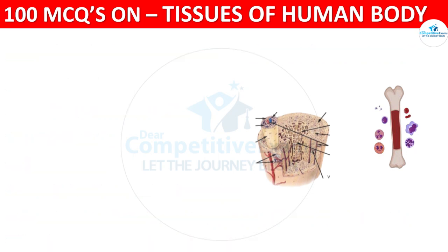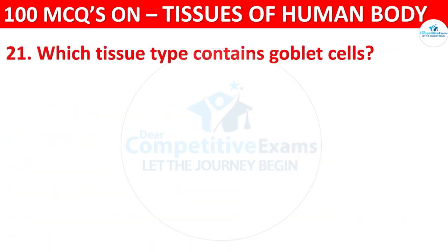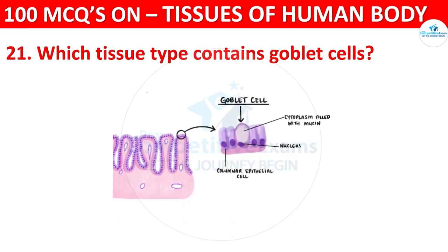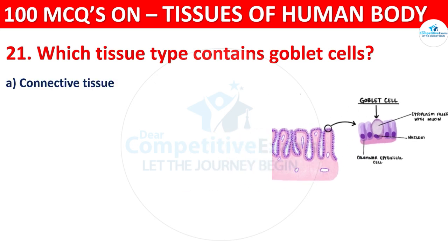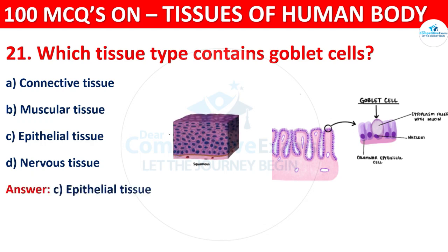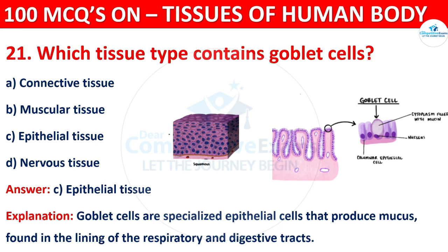Question number twenty-one: which tissue type contains goblet cells? Options are connective tissue, muscular tissue, epithelial tissue, or nervous tissue. The correct answer is C, that is epithelial tissue. Goblet cells are specialized epithelial cells that produce mucus, found in the lining of the respiratory and digestive tracts.